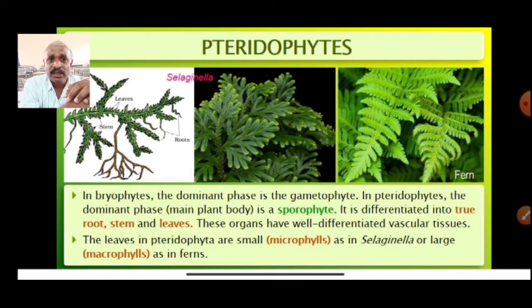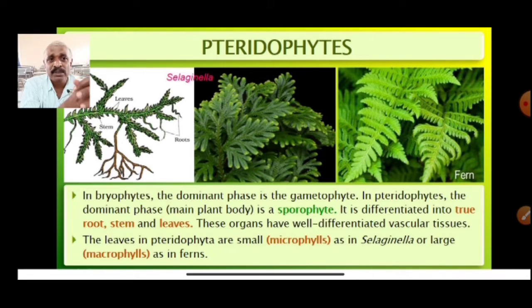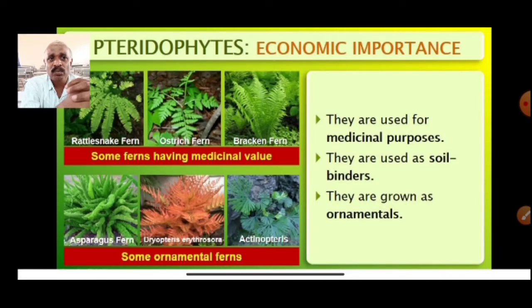The leaves in pteridophytes are very small — hence we call them microphylls. But in Selaginella the leaves are also small, while in ferns we get large leaves. In Selaginella small leaves are present, whereas ferns have large leaves.